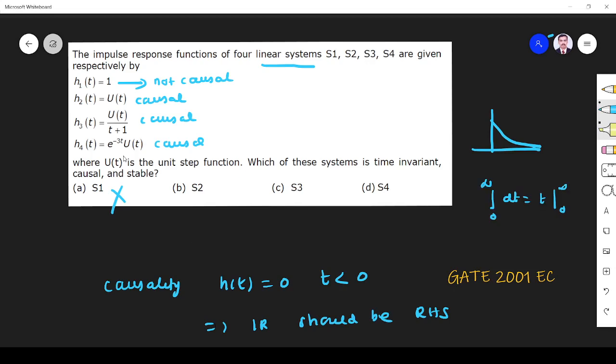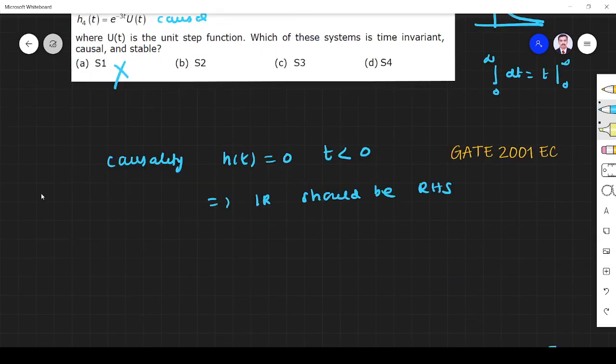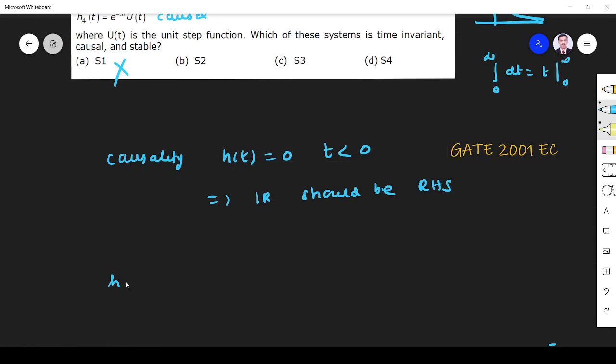This one is not possible. Now, you will check for time invariant. You'll see out of these four which are time invariant. For first one, it is independent of time. So it is time invariant. This one is also time invariant, whatever will be the value, you will get one. But H3(t), H3(t) is given by